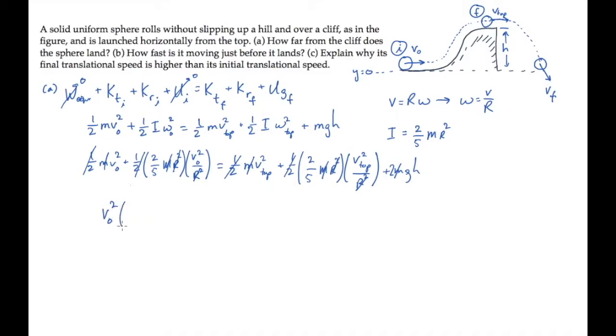Now we can factor out a v-naught-squared on the left-hand side, and replacing one plus two-fifths on each side with seven-fifths, lets us solve for the translational speed at the top of the hill. And that's given by the expression shown here. It equals the square root of v-naught-squared, the initial speed-squared, minus ten-sevenths g times h, the height of the hill.